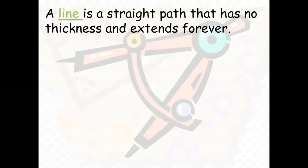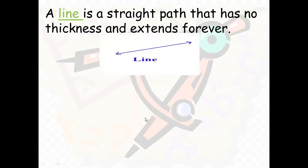Let's move on to the next one, which is the line. A line is a straight path — it is straight, has no thickness, and extends forever. A line does not have any stop; it can keep going and going. A line usually looks like this — you can see there are two arrows on both sides, which means it can keep getting longer and longer. It does not have thickness and can keep on extending.